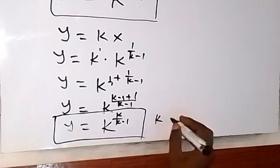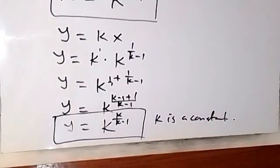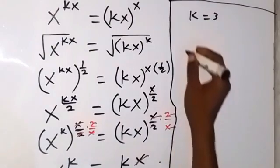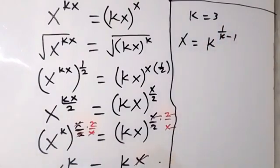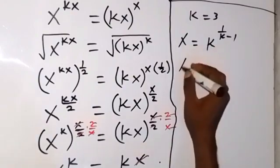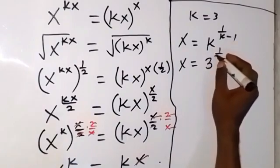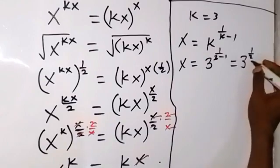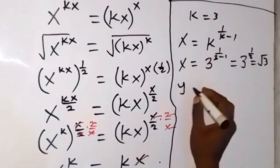Where k is a constant. Now let's try to check this by using k equals 3. From our result, x equals k raised to power 1 over k minus 1. Putting k as 3, we have x equals 3 raised to power 1 over 3 minus 1, which is 3 raised to power 1 over 2 — the same thing as root 3. So x equals root 3.